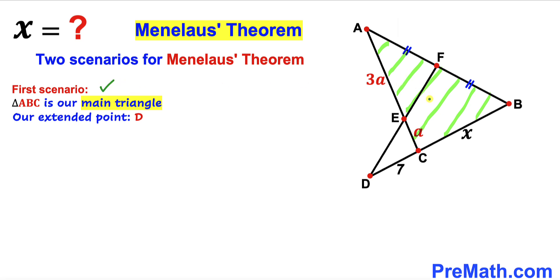Let's assume that this triangle ABC is our principal triangle and D is our extended point. And our Menelaus' theorem is going to work this way. Let's focus.